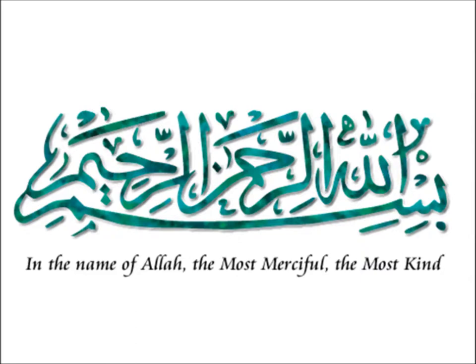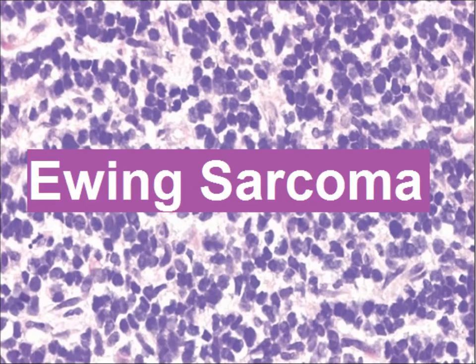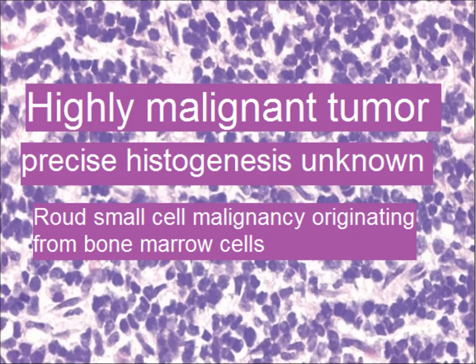Today we are going to discuss Ewing sarcoma. Ewing sarcoma of bone is a highly malignant tumor of the bone. Its precise histogenesis is unknown, and it is composed of round small cells originating from bone marrow cells.